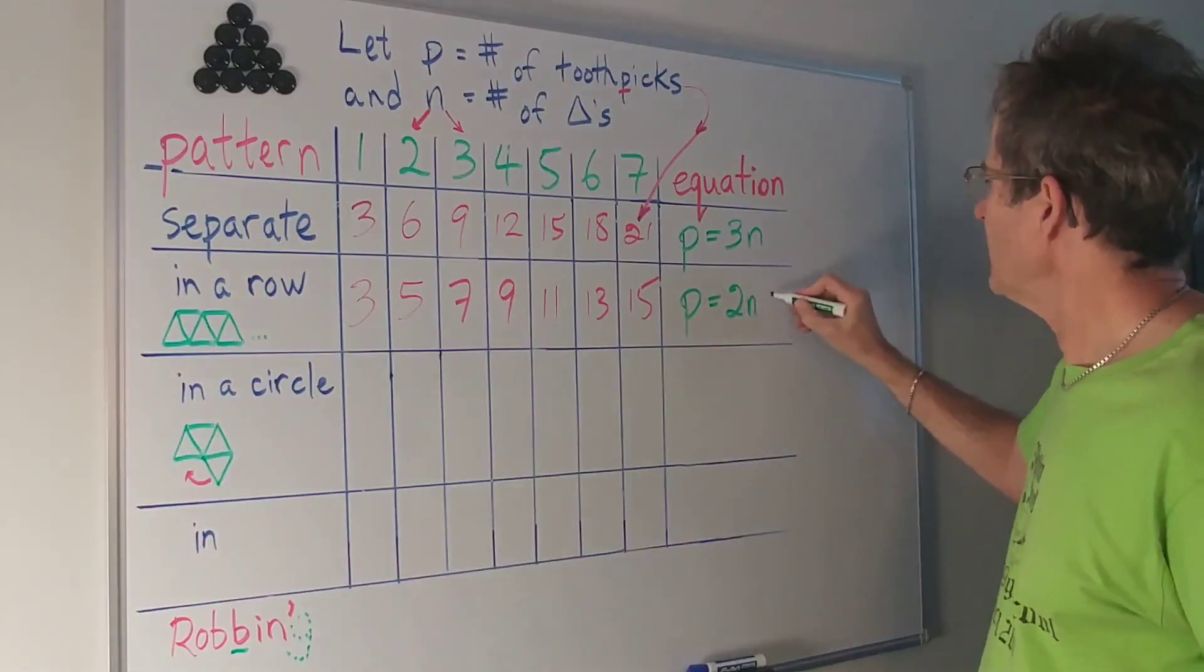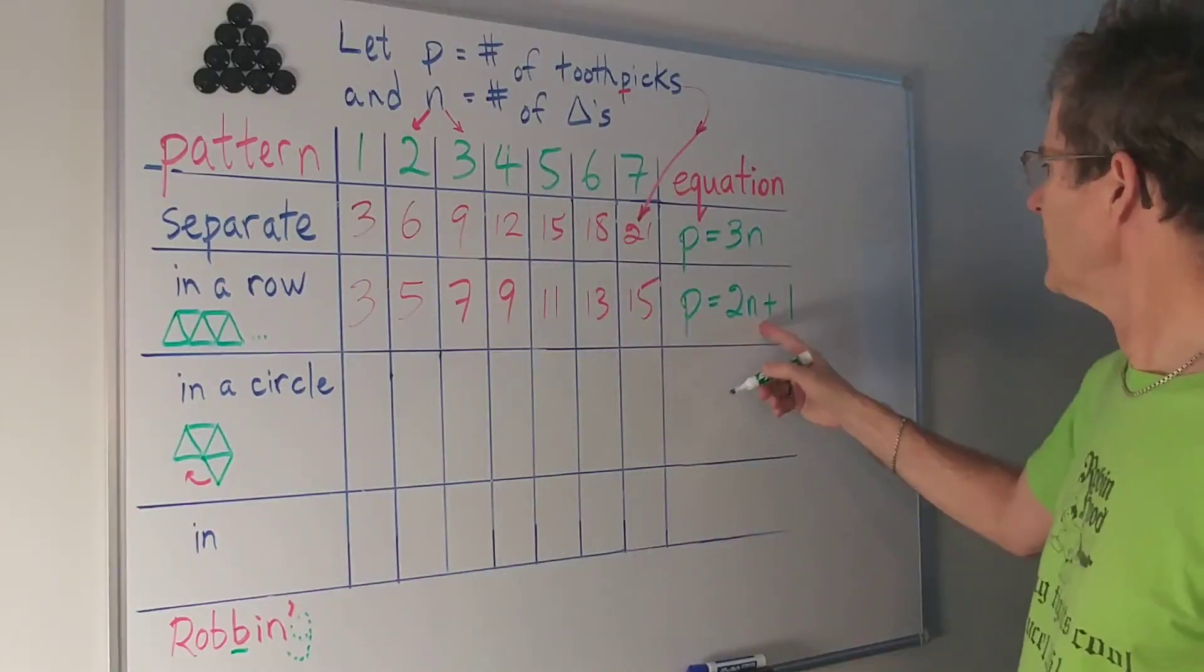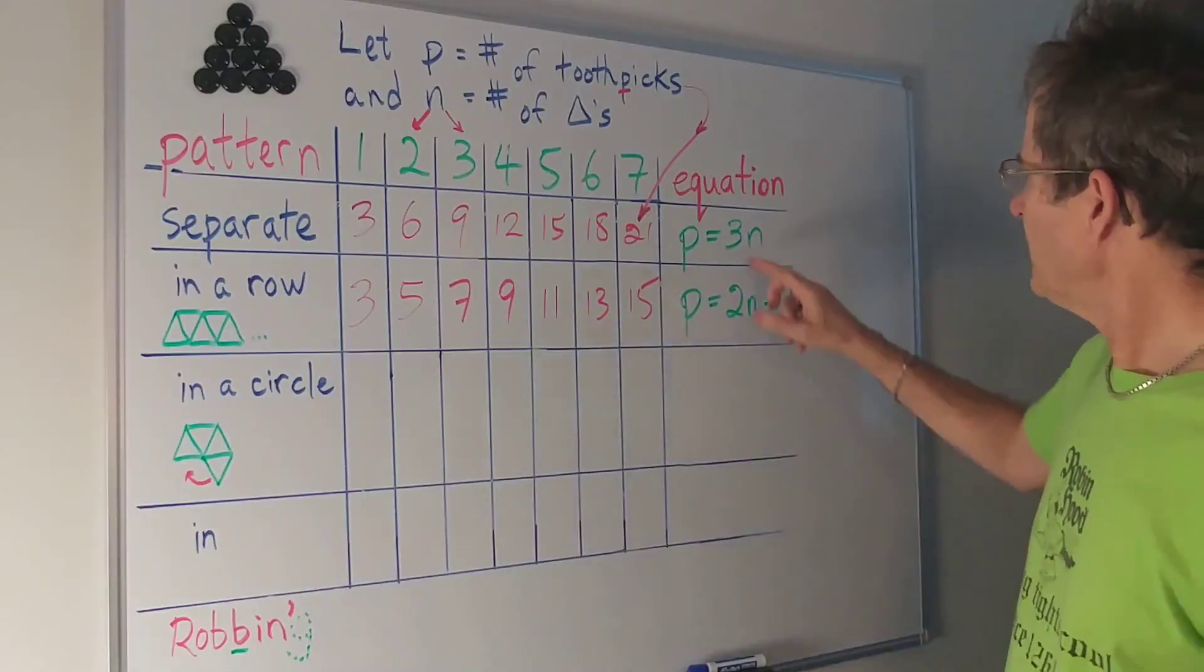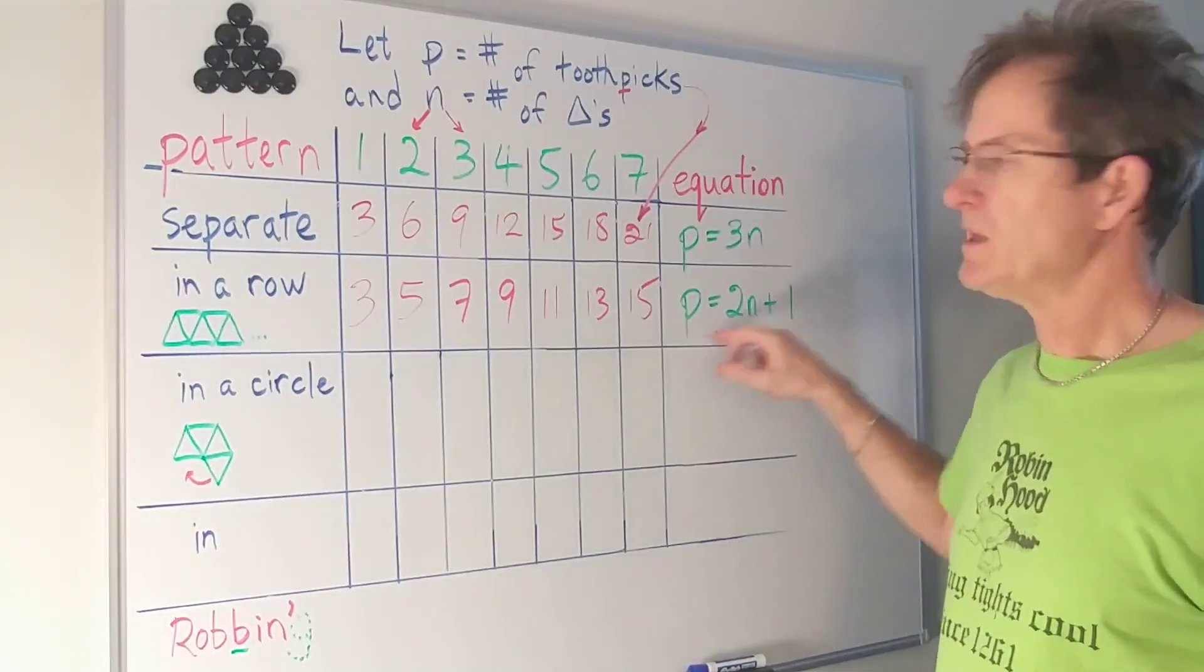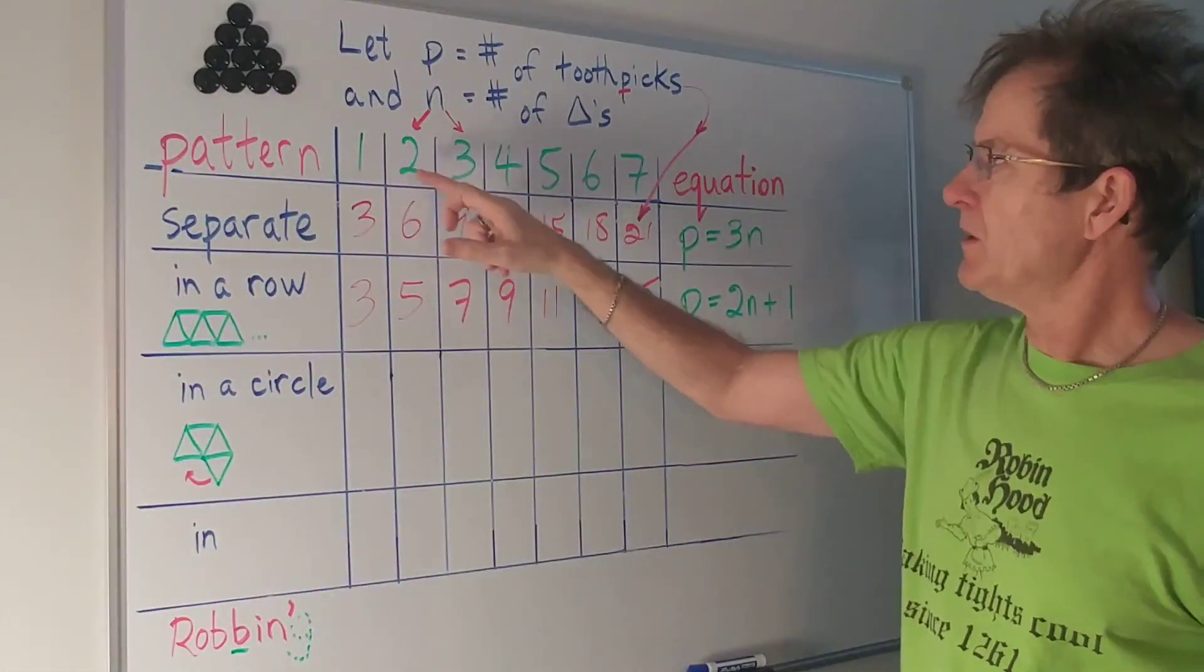And the number of toothpicks required would be, if you can see the pattern, two times the number plus one. So for example if I wanted to make four triangles, two times four is eight plus one is nine. So it confirms that. The three and the two are known as the slope or the rate of change. It's how much it goes up each time you make one more triangle.